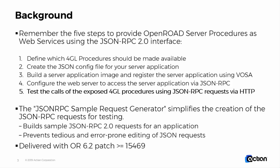It builds sample JSON RPC 2.0 requests for an application, and therefore it prevents tedious and error-prone manual editing of JSON requests, so you don't have to think about typos and things like that. The utility is delivered with the OpenROAD 6.2 patch.